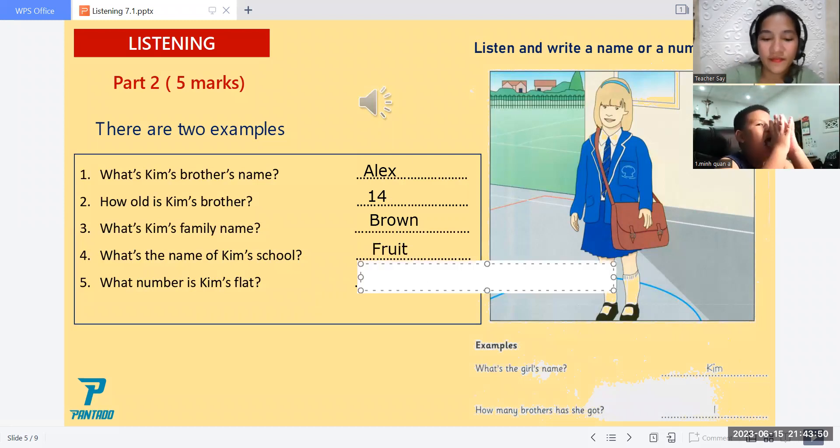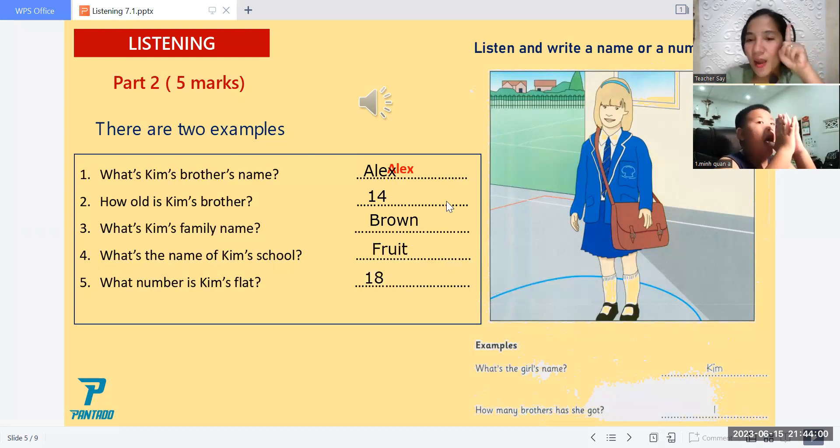That is the end of part two. So now let's check. Your answer number one is Alex. Okay, very good. So you have one point. And how about number two? Fourteen. Number two is fourteen. Okay, very good again. So you have two points now.